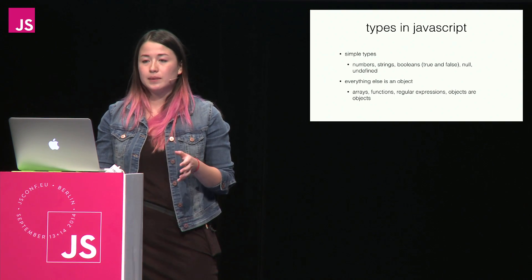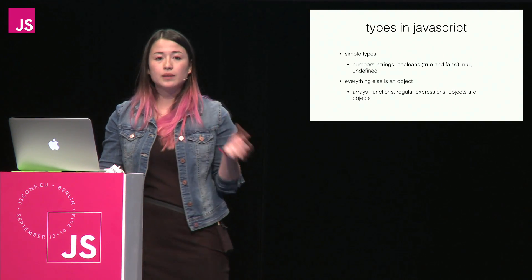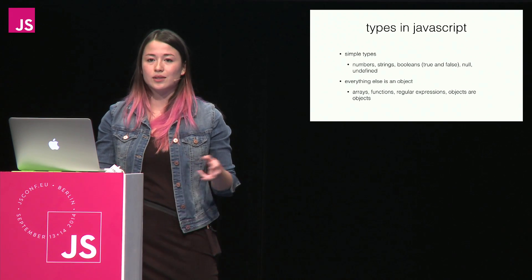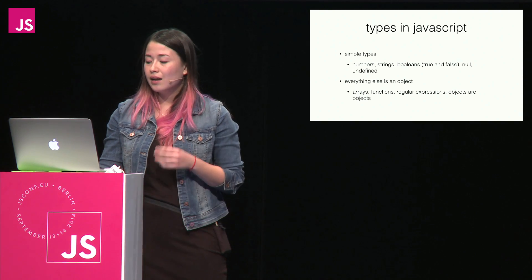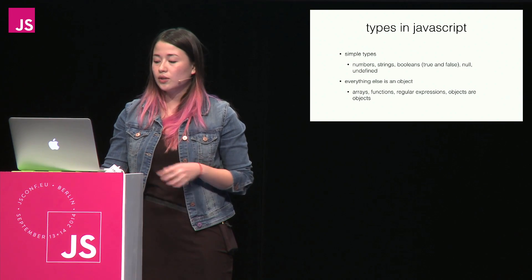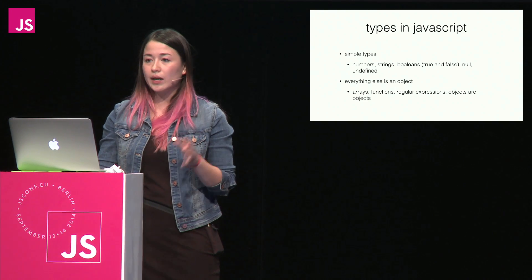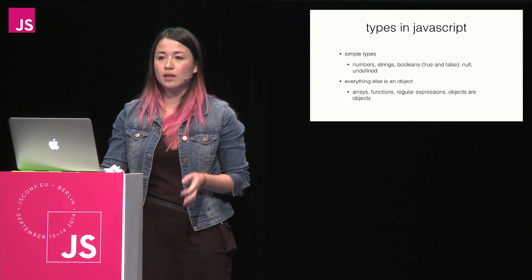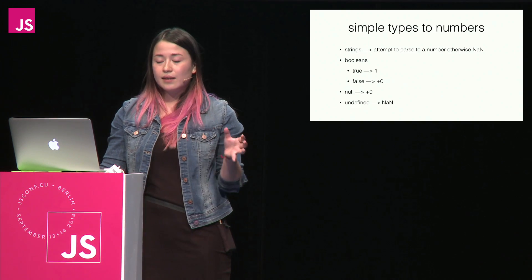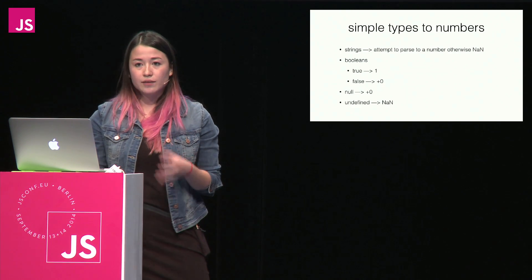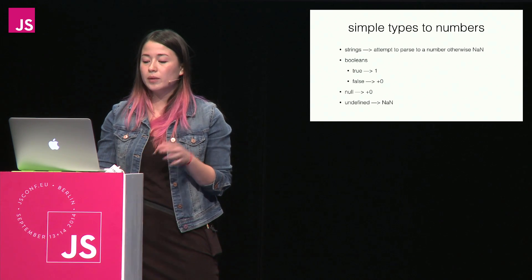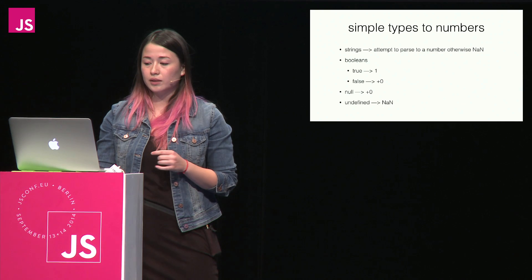There are two categories of types in JavaScript. You have the simple types: numbers, strings, Booleans (the values true and false), null, and undefined. Everything else in JavaScript is an object — so arrays, functions, regular expressions, and of course objects themselves. In the next three slides, I'm going to define how JavaScript typically implicitly converts between its different types, and we'll be using this knowledge for the remainder of the talk.